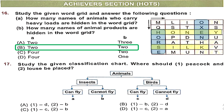Question 17: Where should peacock and louse be placed in the classification chart? Peacock is a bird that can fly, so it goes under Animal → Bird → Can Fly, which is category C. Louse is an insect that cannot fly, so it goes under Animal → Insect → Cannot Fly, which is category B. For peacock (one) it should be C, for louse (two) it should be B. The correct option is C.